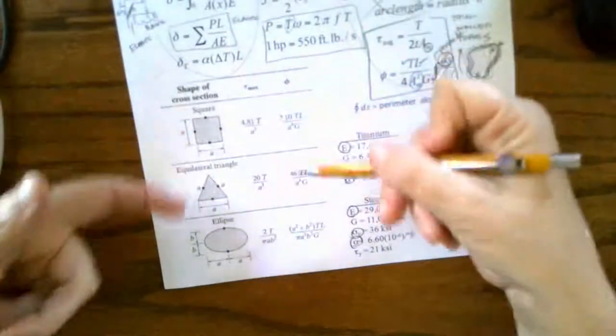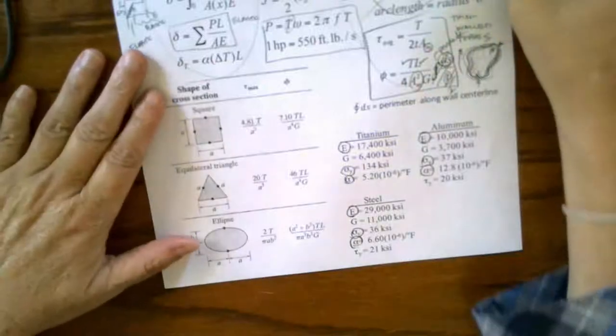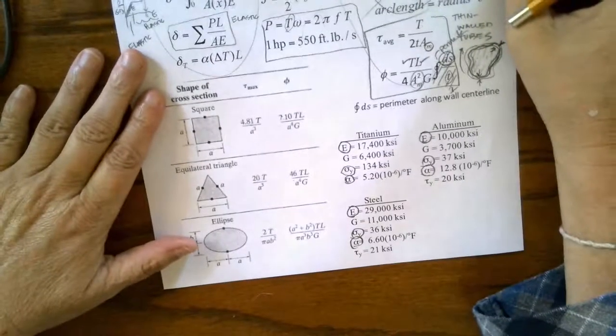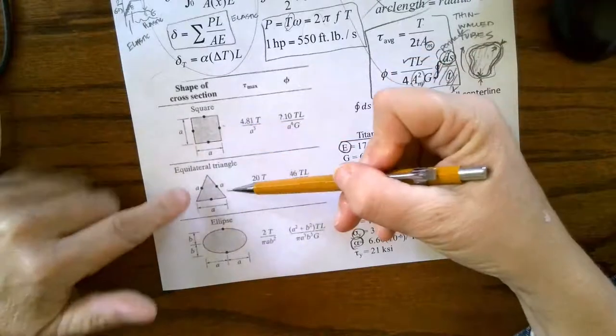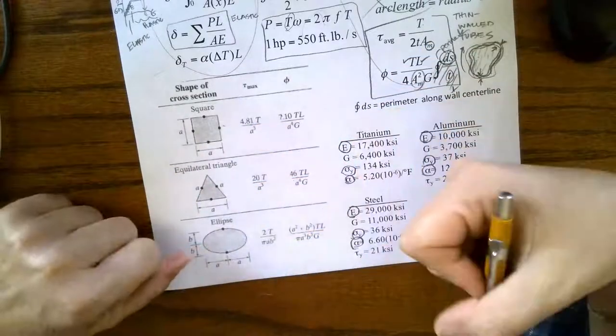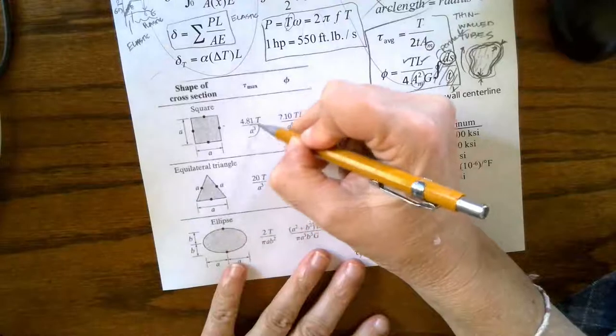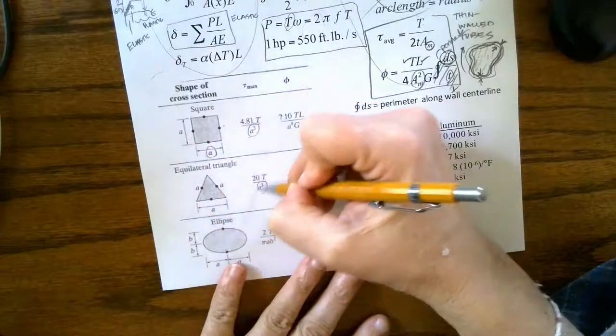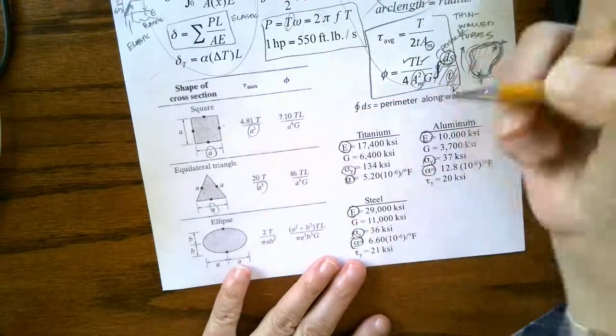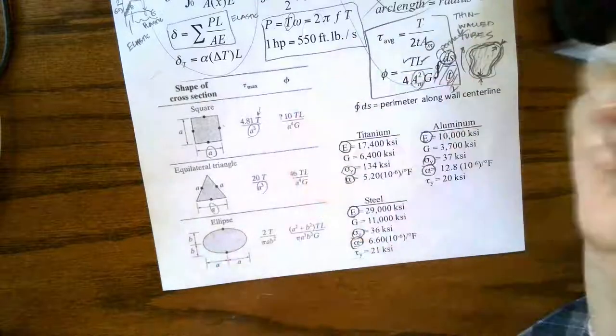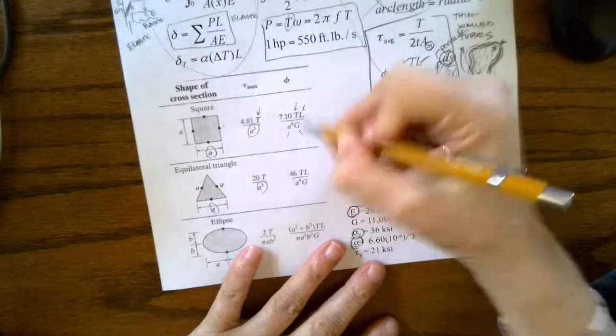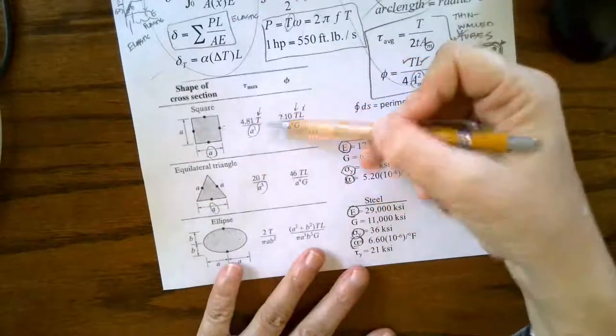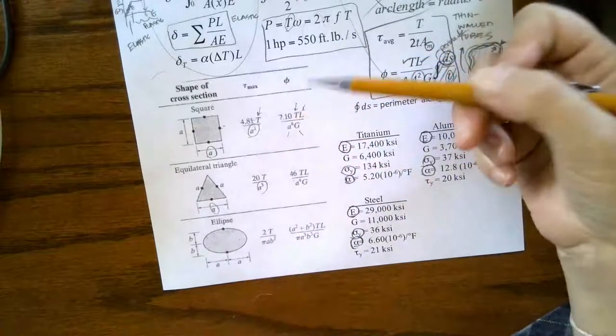And then you have these other irregular shapes - a square, a triangle, and an ellipse. A is defined. Ellipse - T, that's just your torque. Torque, length, A defined, G. So it's just a matter of finding the right equation and understanding what your variables are.